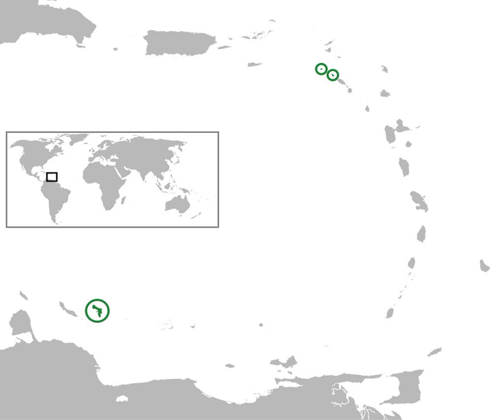Although in the English language they are usually described as being part of the Leeward Islands, in French, Spanish, Dutch and the English spoken locally, they are considered to be part of the Windward Islands. The Windward Islands are all of volcanic origin and hilly, leaving little ground suitable for agriculture. The highest point is Mount Scenery, 887 metres, on Saba — also the highest point in all the Kingdom of the Netherlands.